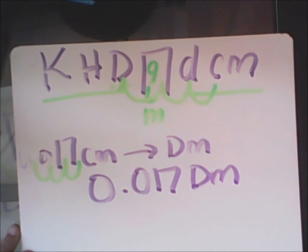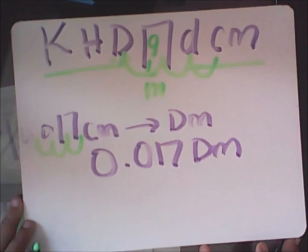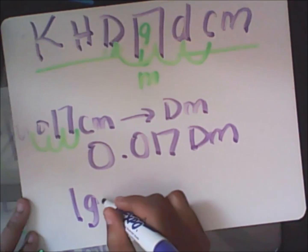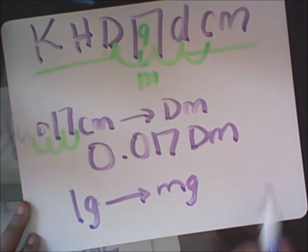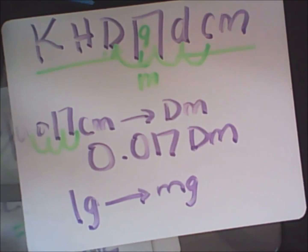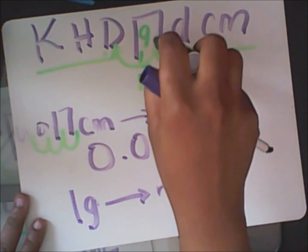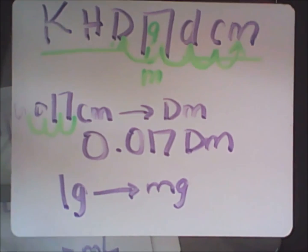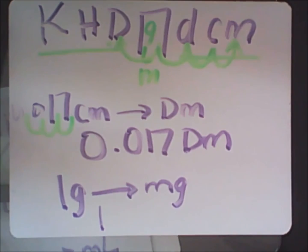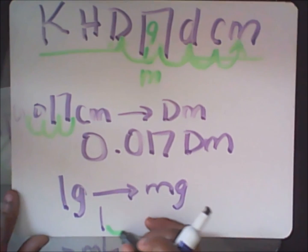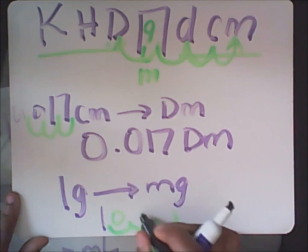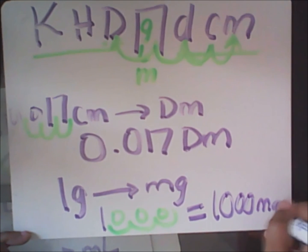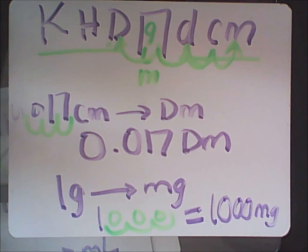Let's try one more: 1 gram converted to milligrams. Milli is here, gram is there. To get to milli, start at gram and go one, two, three places to the right. Assume the decimal is at the end, move it three places right, and fill the gaps with zeros. You end up with 1,000 milligrams. It's just that simple.